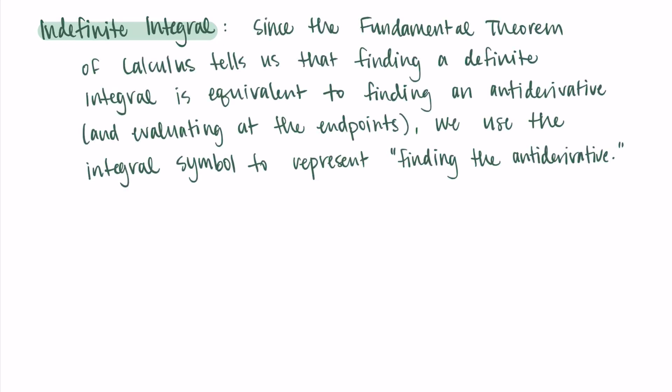Because the fundamental theorem of calculus tells us that finding a definite integral is equivalent to finding an antiderivative and then evaluating at the endpoints, that f(b) minus f(a) thing that we've seen before, we now can just say that we use the integral symbol to represent finding the antiderivative. So that integral, that swishy s thing, we're going to use that to represent finding the antiderivative. So now if I just draw that integral symbol with no bounds on it of a function f(x) dx, then I can say this is equal to big F(x), where big F is an antiderivative of f.